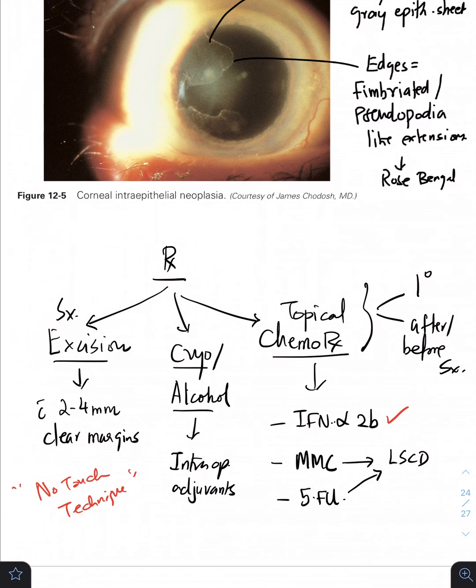There are three options: you have interferon alpha-2b, mitomycin C, and 5-fluorouracil. You may have heard about mitomycin C and 5-fluorouracil being used in glaucoma filtering surgeries, but the risk is using of MMC and 5-FU can lead on to limbal stem cell deficiency and ocular surface toxicity. And that is why whenever you give these two drugs, you'll be very careful, closely monitor, and make sure that you prevent systemic absorption by using punctal plugs.